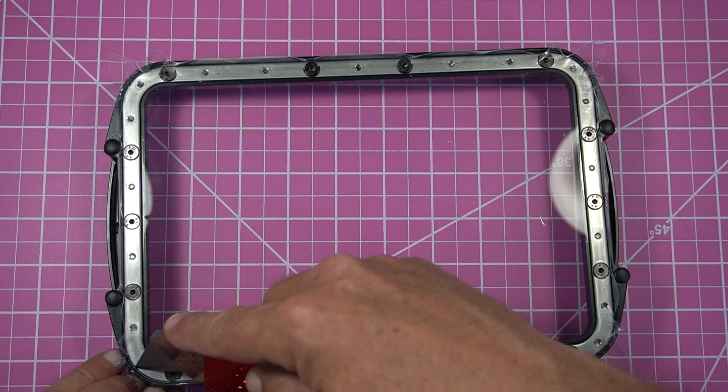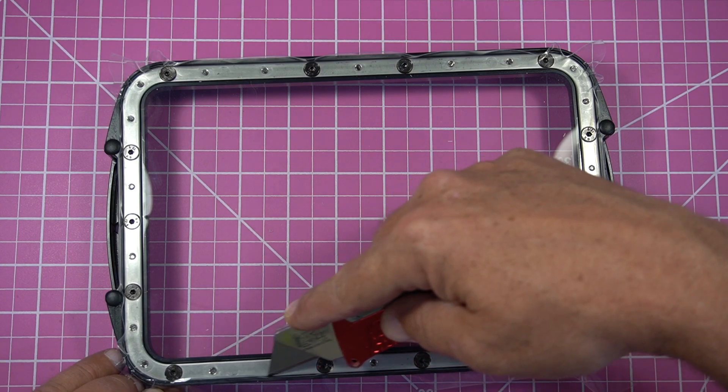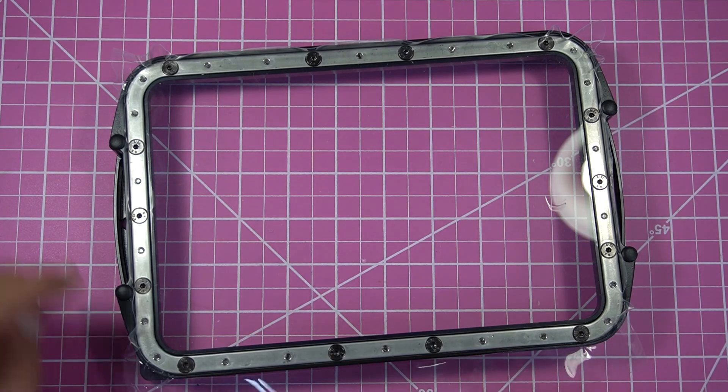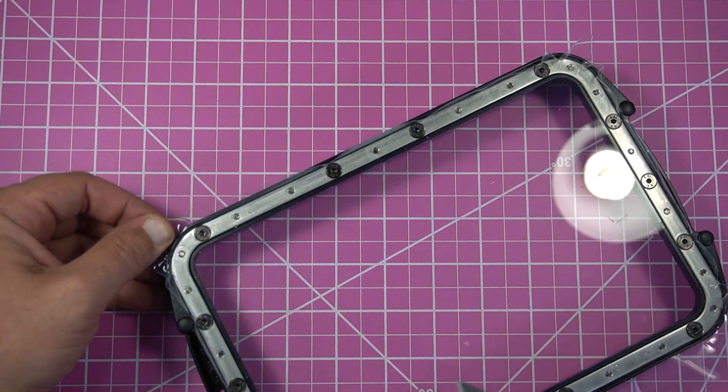So this part, just be careful. Have a nice new sharp knife, come around the inside edge, and start taking off all this excess FEP.